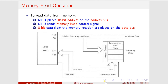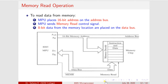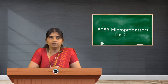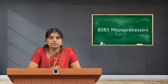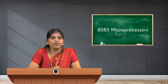The first step: the MPU places the 16-bit address on the address bus, which you can see in the diagram. That 16-bit address bus is connected to the memory chip. There is a memory decoder section in the memory chip which decodes the address sent through the address bus. Based on that address, the particular memory cell is selected. Next comes the control bus — a single control line known as the memory read control signal, represented as MEM read bar, which is an active low signal.